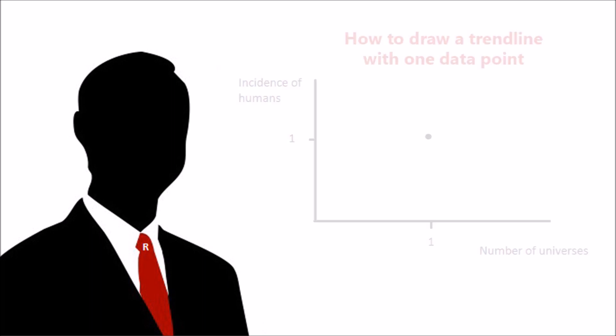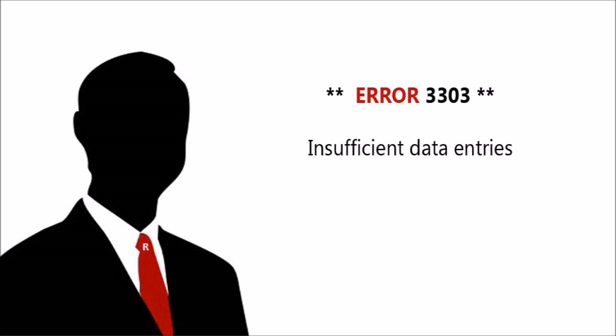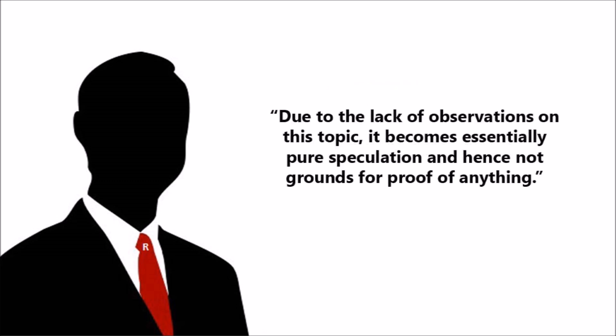Likelihood is determined using multiple data points to determine a trend. When you only have one universe and one planet with life to observe, then there is no accurate way to determine any probability. Whilst it may be possible that the universe could have come into existence with any number of parameters, it could also be possible that the parameters it has now are the only ones that it can come into existence with. Due to the lack of observations on this topic, it becomes essentially pure speculation, and hence not grounds for proof of anything.